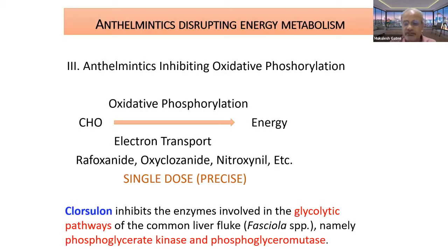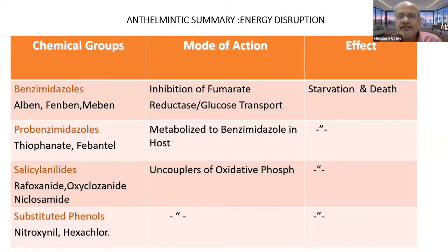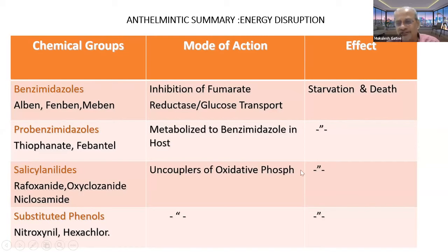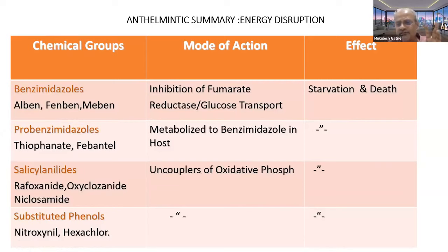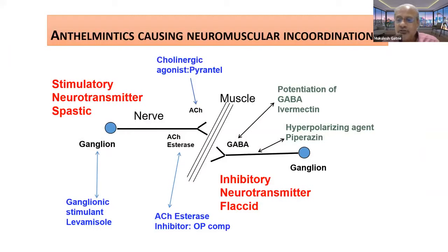Closantel is one more compound affecting energy metabolism by inhibiting certain enzymes of the glycolytic pathway in flukes. To summarize: benzimidazoles cause inhibition of fumarate reductase and glucose transfer — end result is starvation. Probenzimidazoles — end result is starvation. Salicylanilides like rafoxanide and oxyclozanide are uncouplers of oxidative phosphorylation — end result is starvation and death. Substituted phenols — same end result. For fumarate reductase and tubulin mechanisms, divided dose regime and managemental manipulations have tremendous significance.